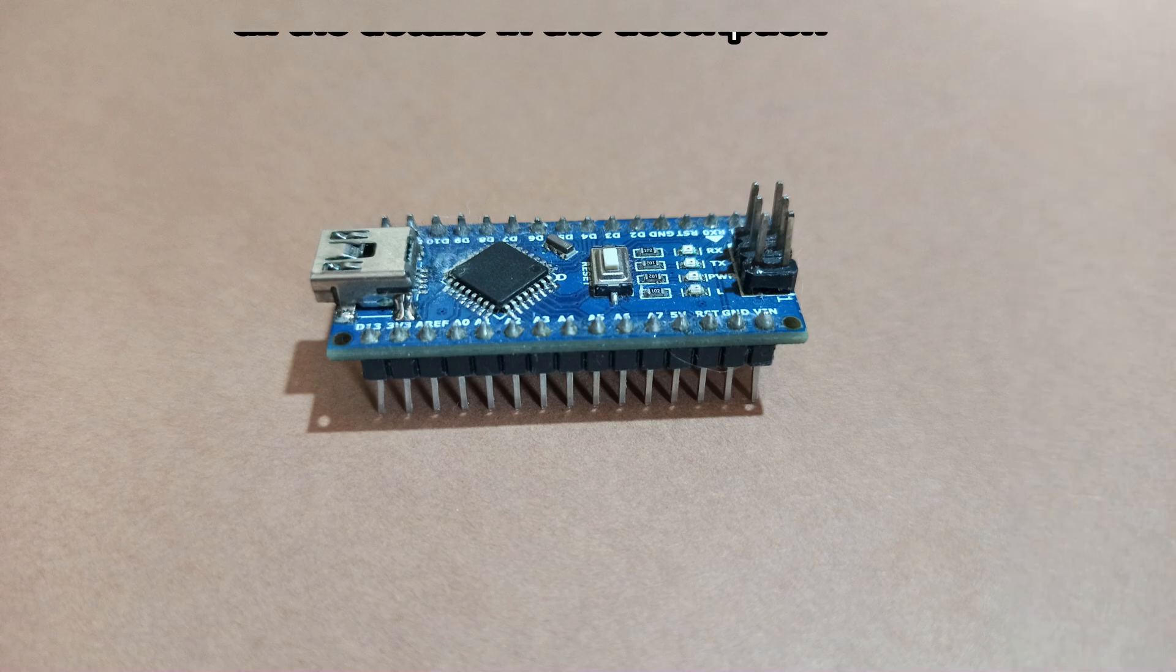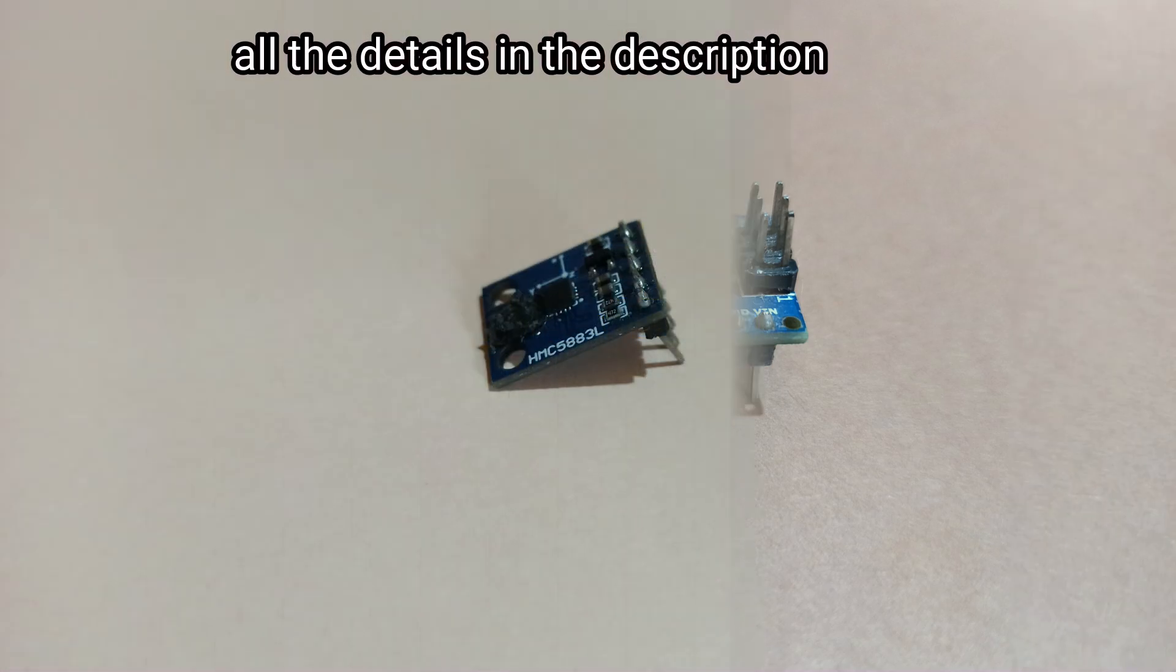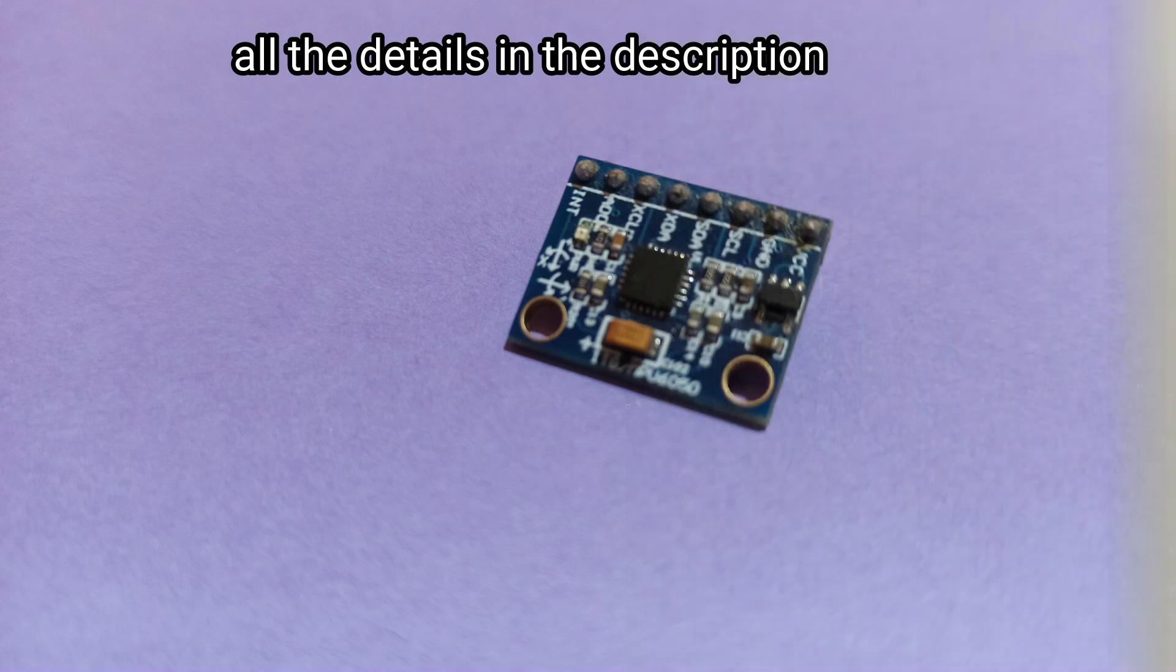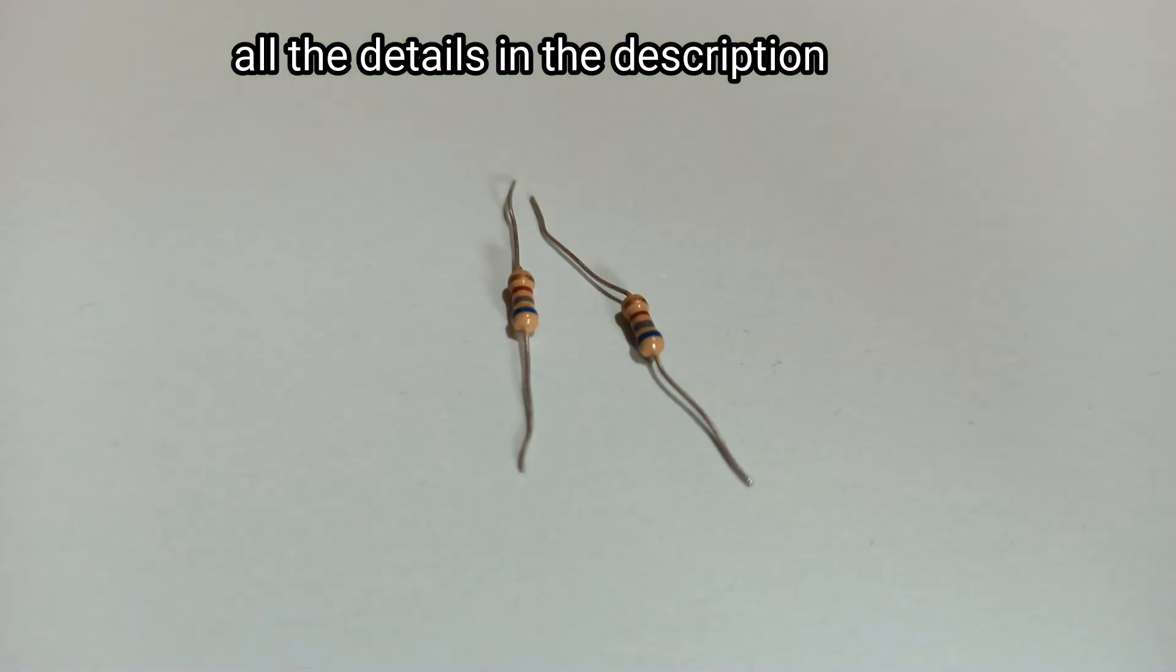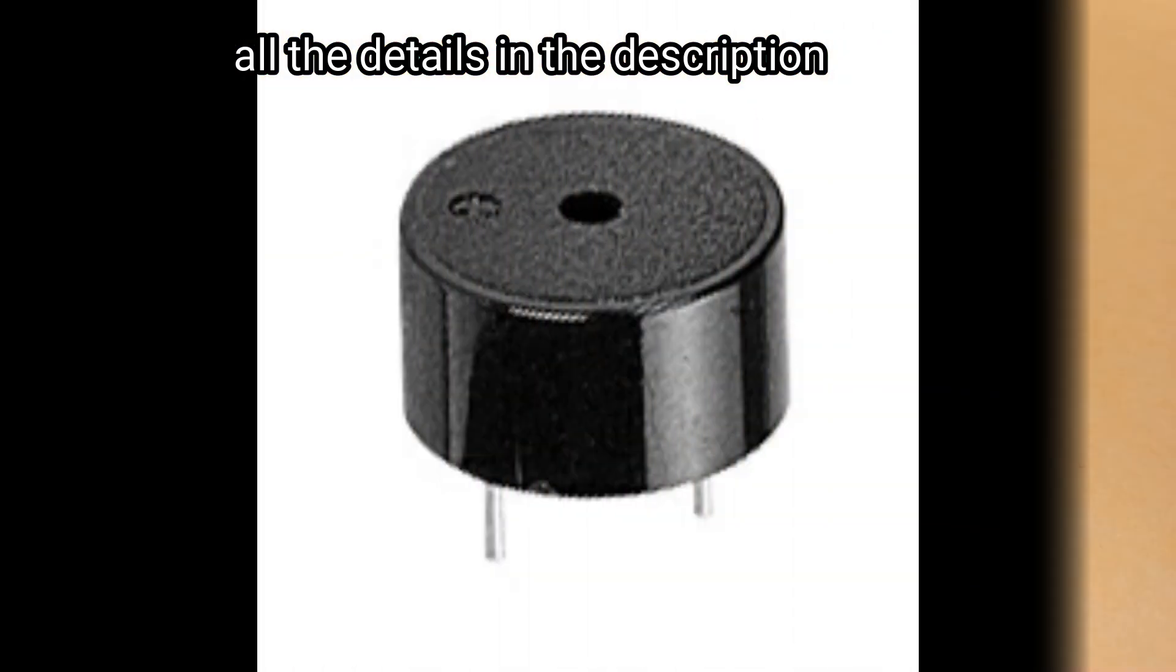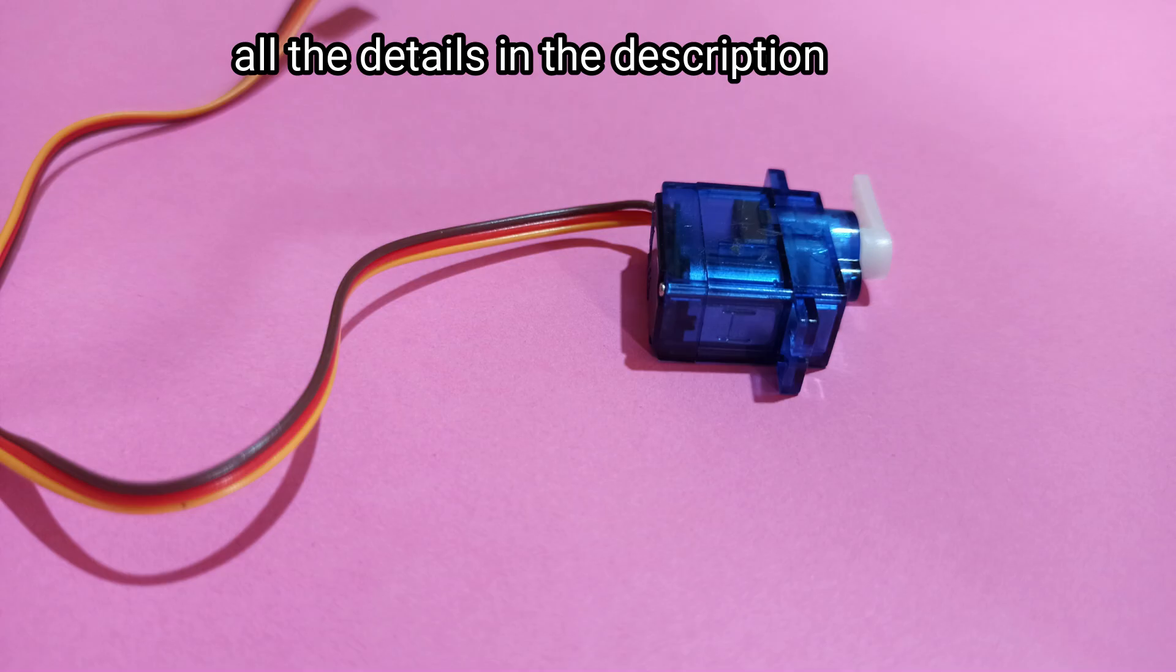We need some components: an Arduino Nano controller, an HMC 5883L compass module, an MPU 6050 accelerometer module, a NEO 6M GPS module, two LEDs, two resistors, a push button, a buzzer, and an SG90 servo motor.